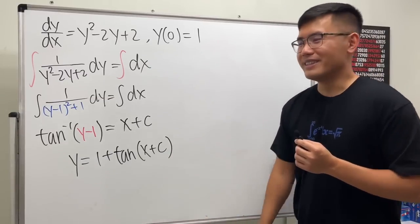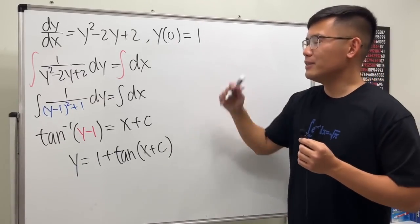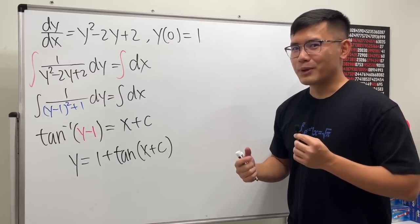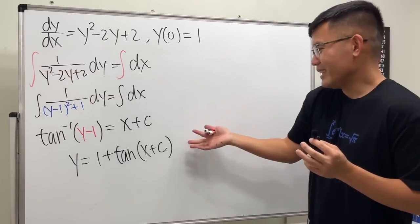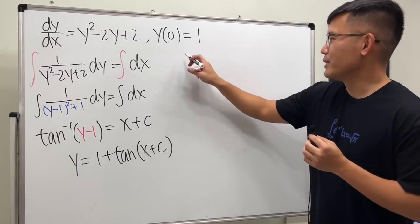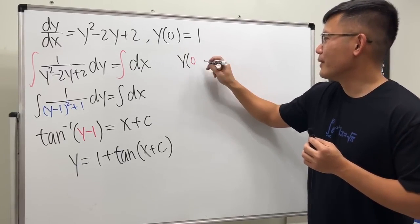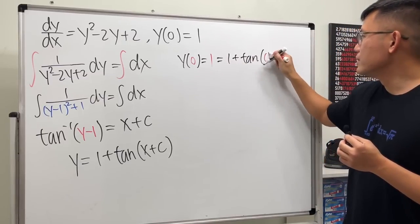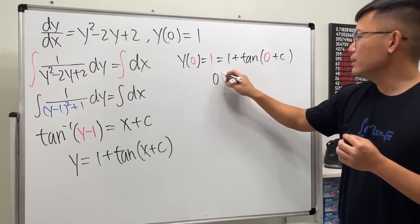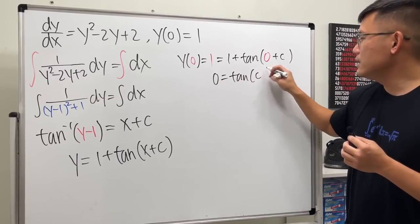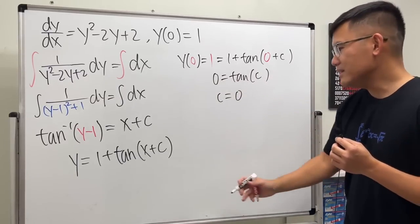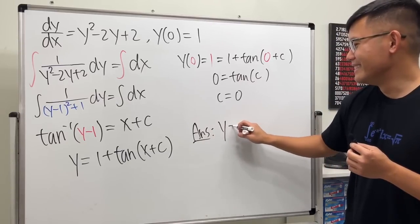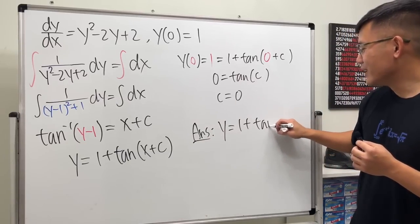All right, but I have an initial condition right here for you guys. I changed the initial condition from the paper because this way the question looks more different. But you know what the answer should be already, but I will still show you guys. So anyway, y(0) = 1, meaning we get 1 + tan(0 + C). And this equals 0 = tan(C), so C has to be equal to 0. And there's nothing there, so the answer, you know it, it's going to be 1 + tan(x).